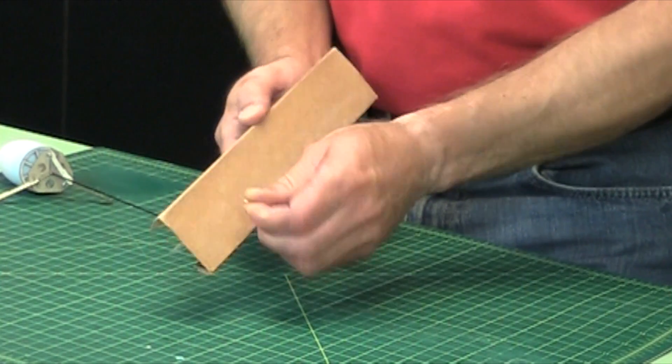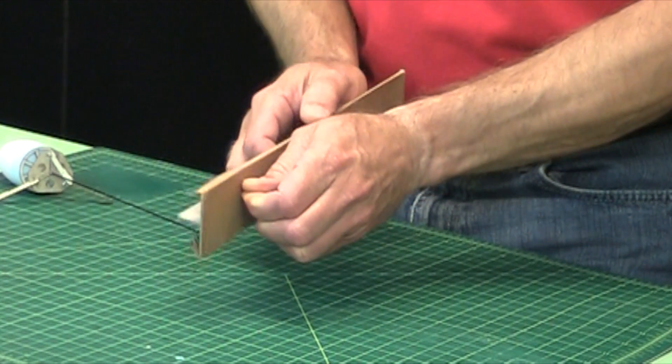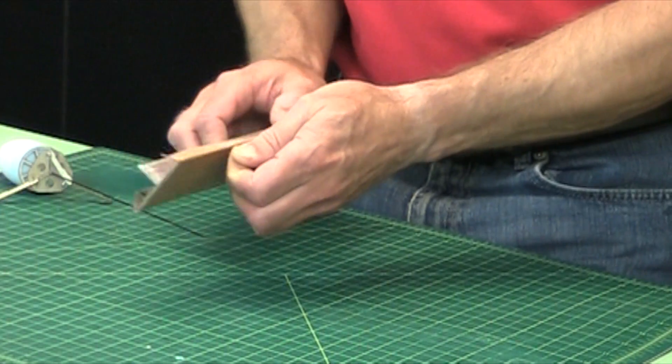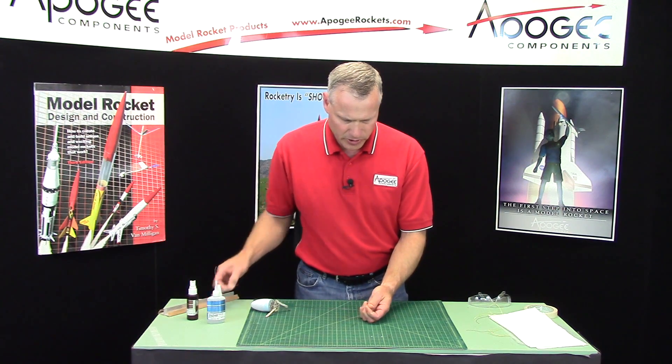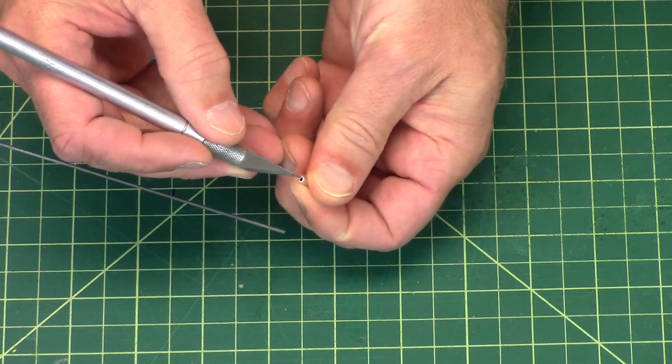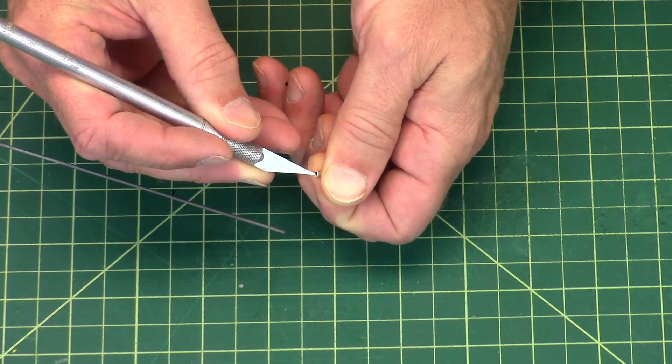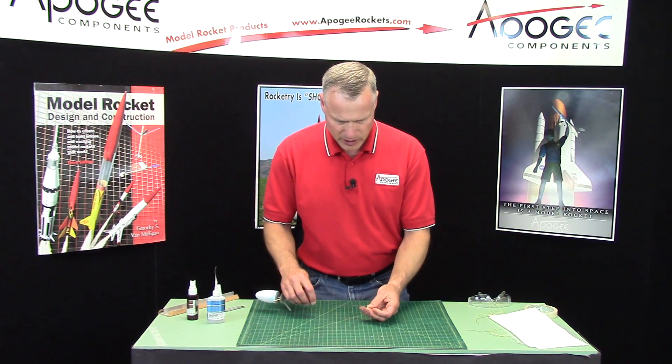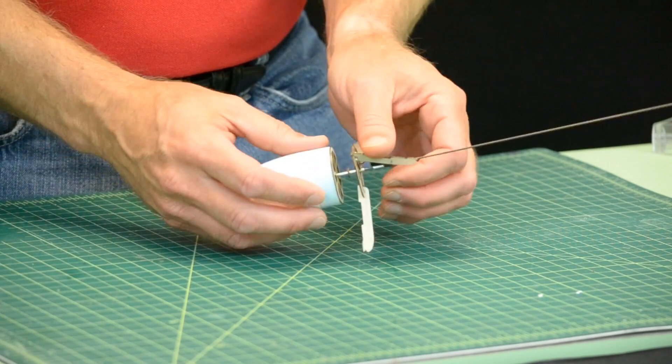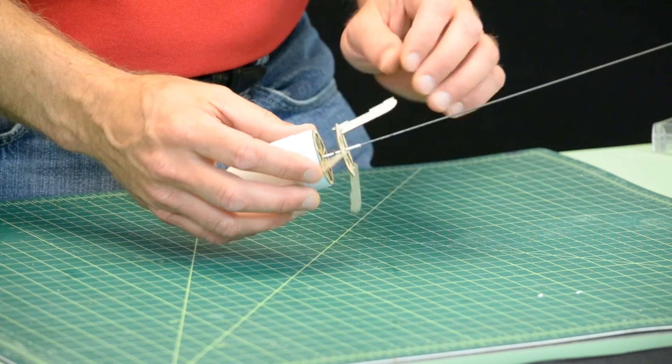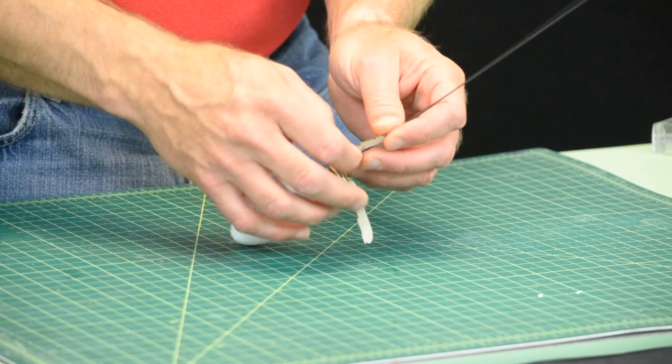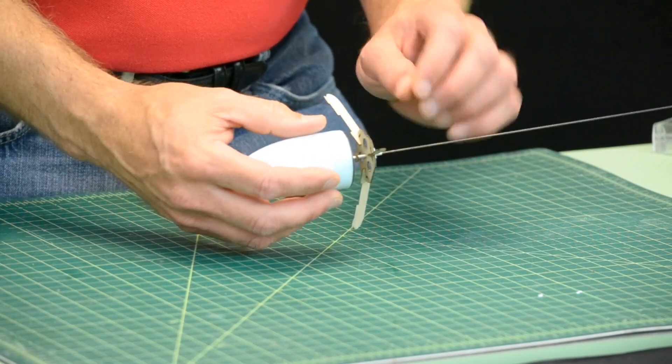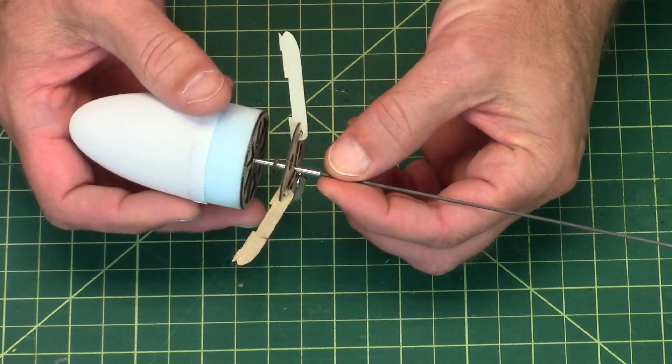Clean out the inside of any of the burrs using a hobby knife, and then slide that up on the shaft. When we put this on, I don't want to pinch it so that it can't rotate.